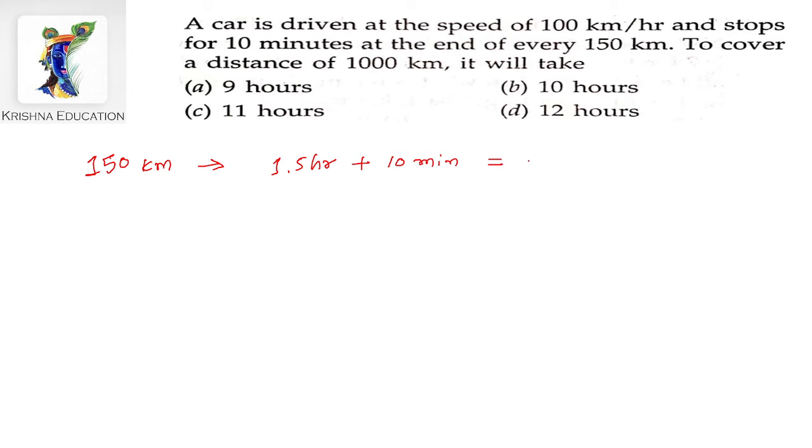So, total time taken is 1 hour and 40 minutes, which is nothing but 1 into 40 divided by 60, which is 5 divided by 3 hours. That is the time duration required to cover 150 km distance.